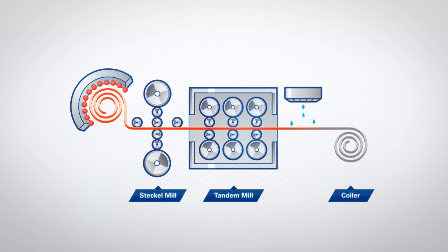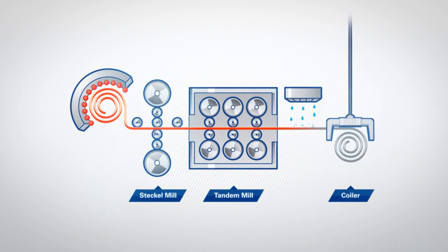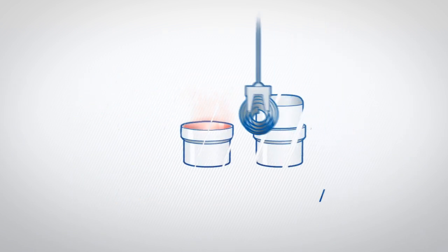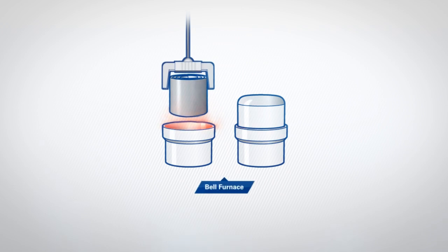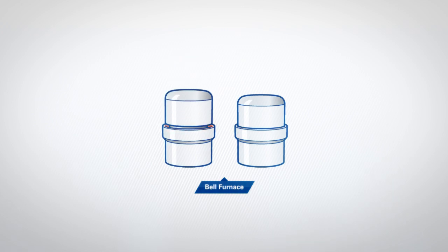After cooling, most coils continue to a cold rolling plant or are sold as black coils. Some of the coils continue to the bell furnaces to homogenize the microstructure of the steel, after which the coils continue to cold rolling.